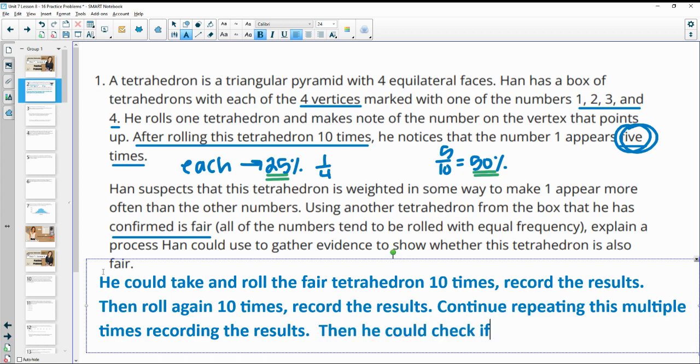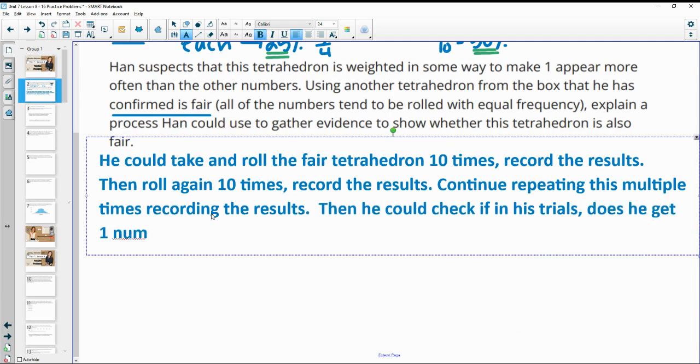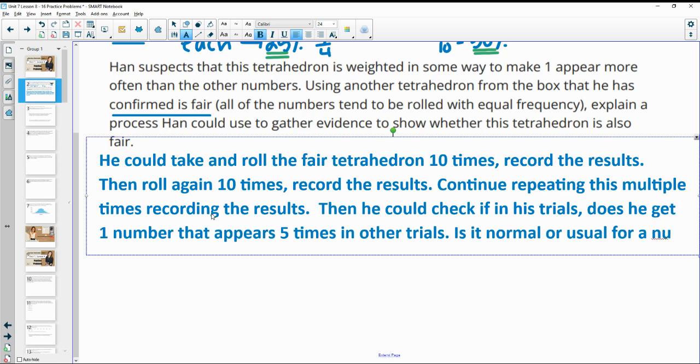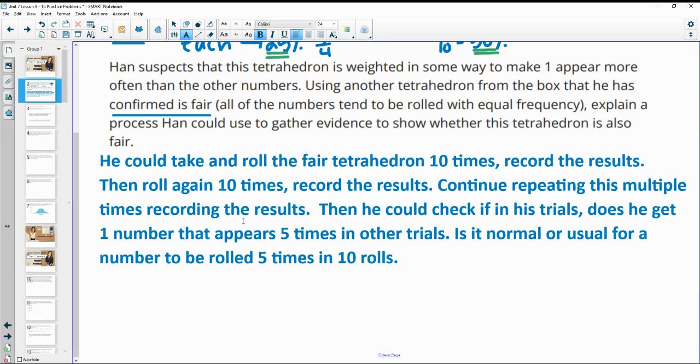Then he could check if in his trials, does he get one number that appears five times in other trials. Basically, is it normal or usual for a number to be rolled five times in 10 rolls by completing the experiment multiple times. Repeat the experiment with a fair dice, see if a number shows up five times. If that seems to be normal, then it's probably a normal dice. If that doesn't happen a consistent amount of times, then the dice is probably not fair.